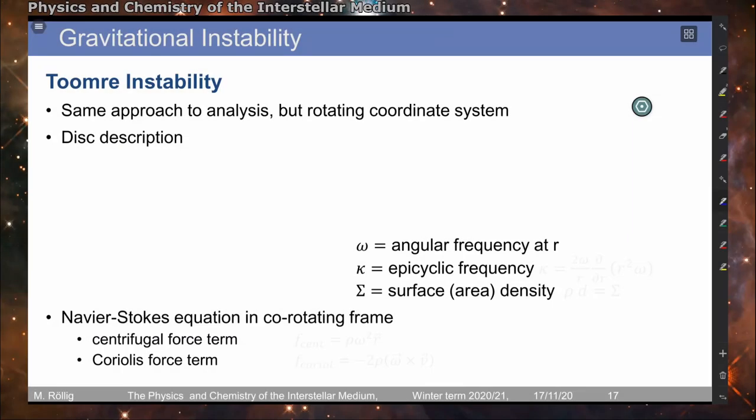So far we were looking at gravitational instability of an infinitely extended isothermal medium. We will now look in the second part at other kinds of instabilities.